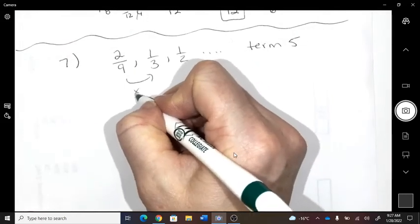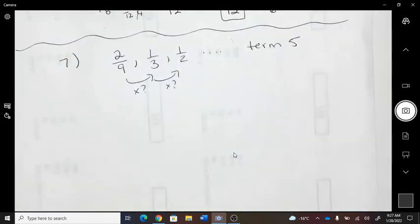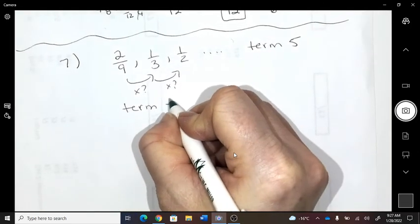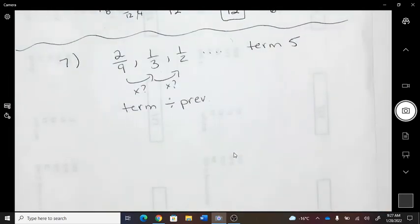So can you tell what I'm multiplying by? Probably not, right? You probably can't see it. So we take a term, and we divide by a previous. If we can't see the multiplier, we divide by previous.